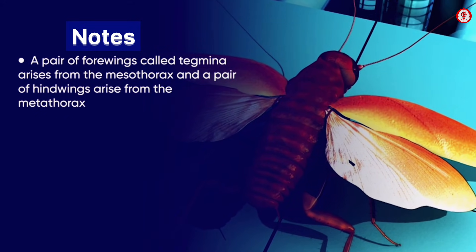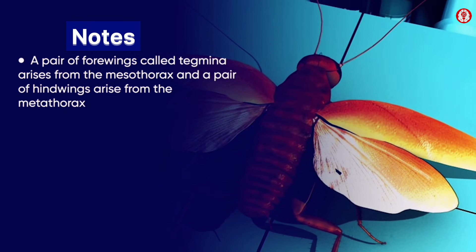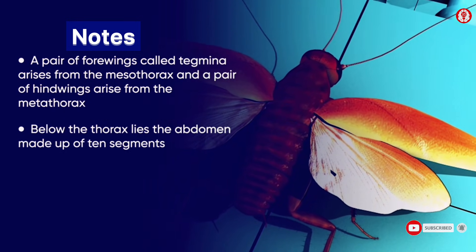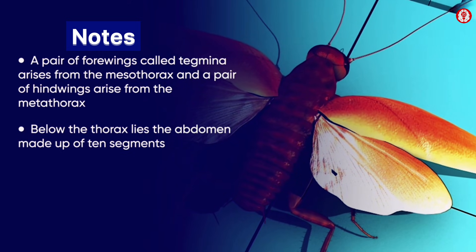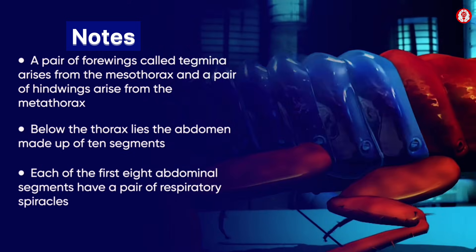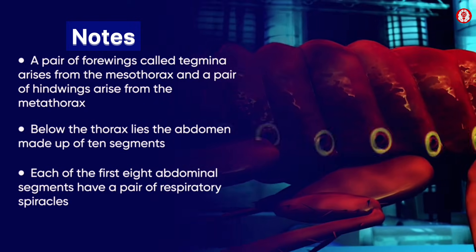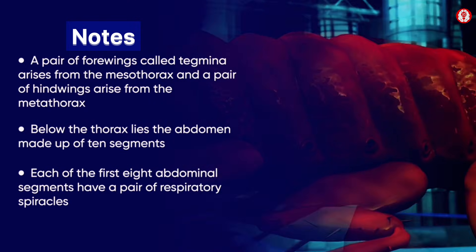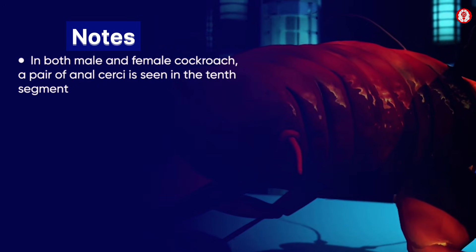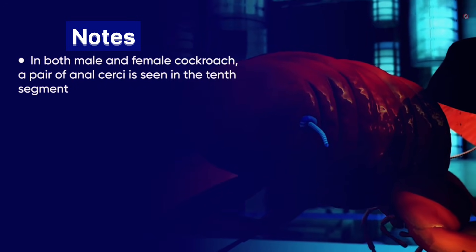In summary: a pair of forewings called tegmina arises from the mesothorax and a pair of hind wings arise from the metathorax. Below the thorax lies the abdomen, made up of ten segments. Each of the first eight abdominal segments has a pair of respiratory spiracles, and in both male and female cockroach, a pair of anal cerci is seen in the tenth segment.